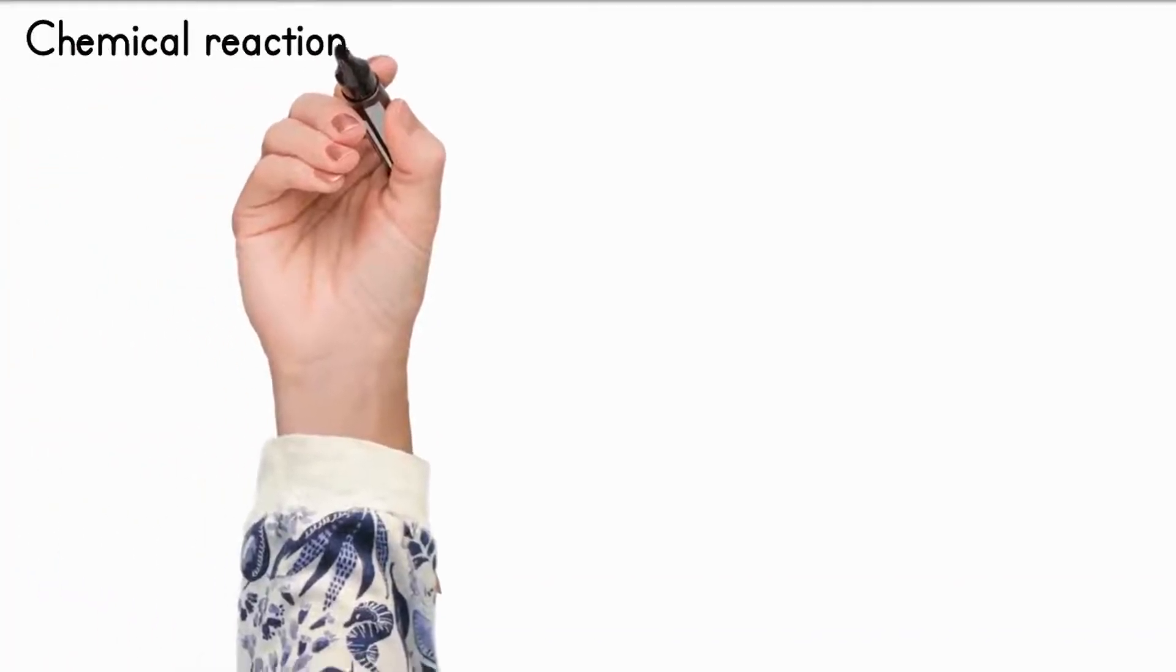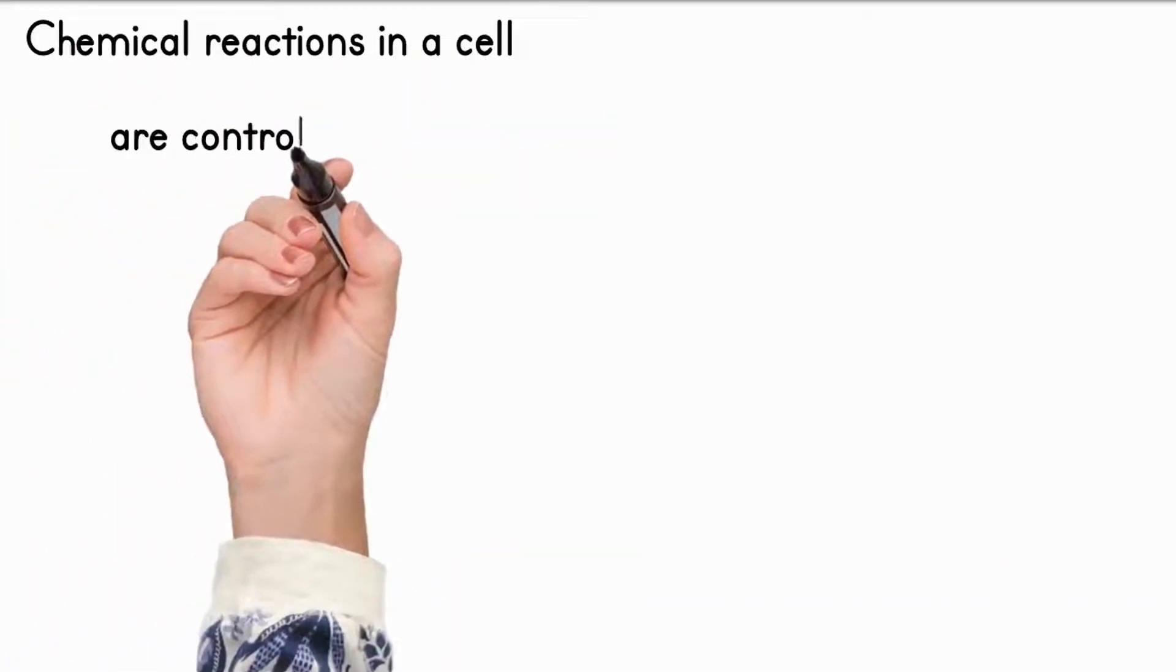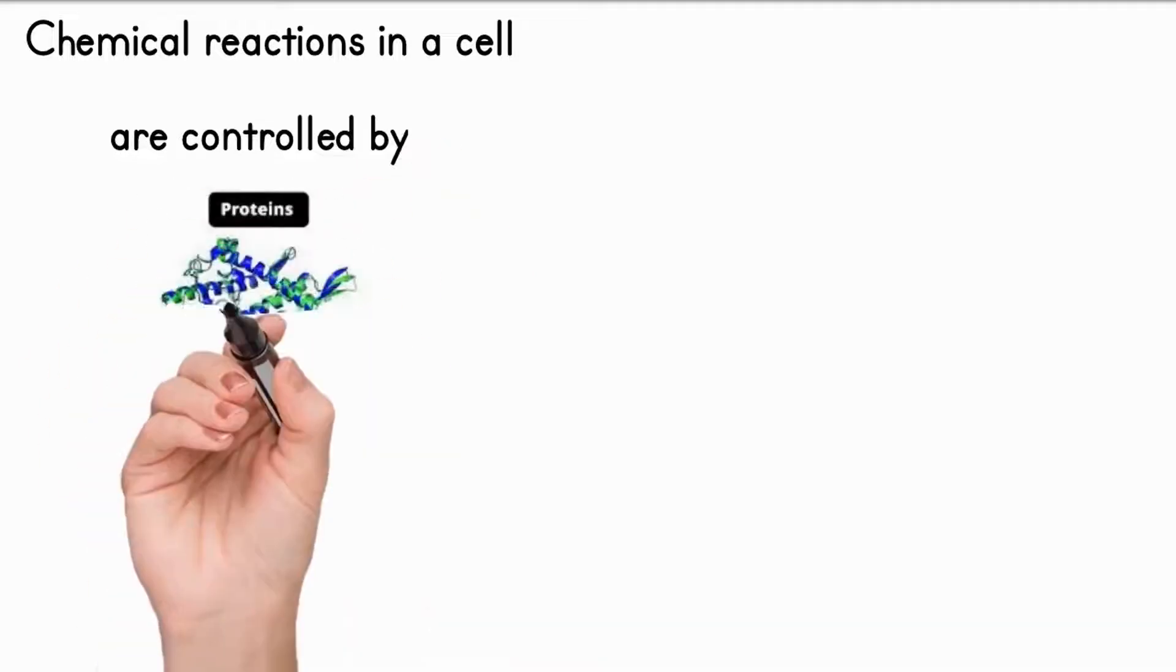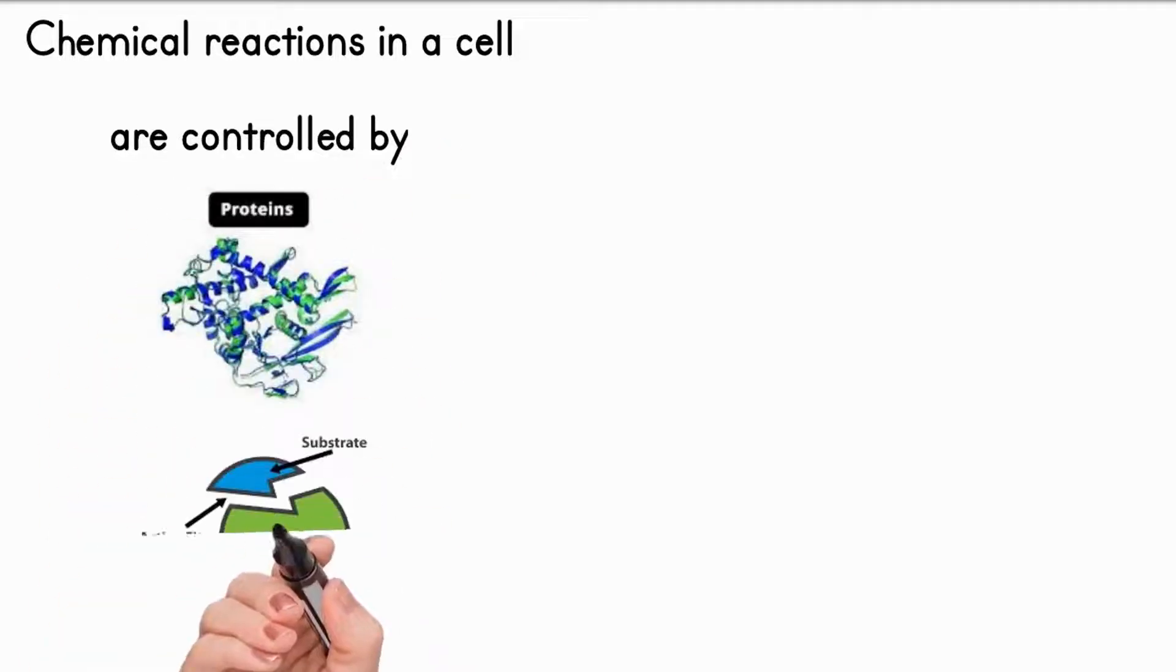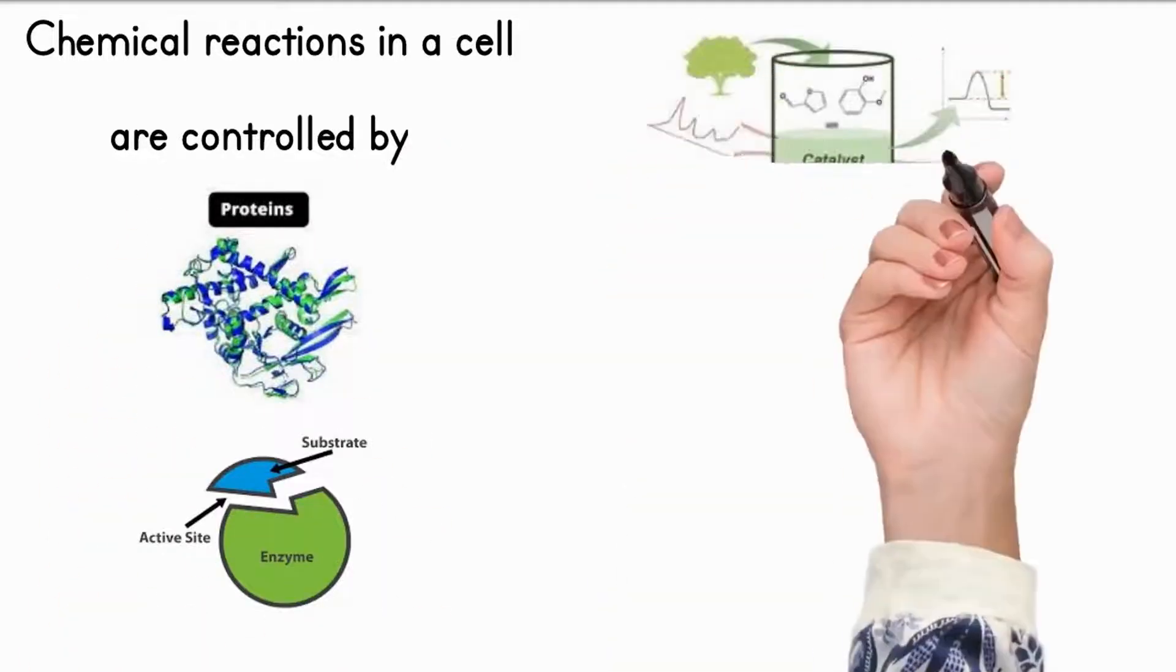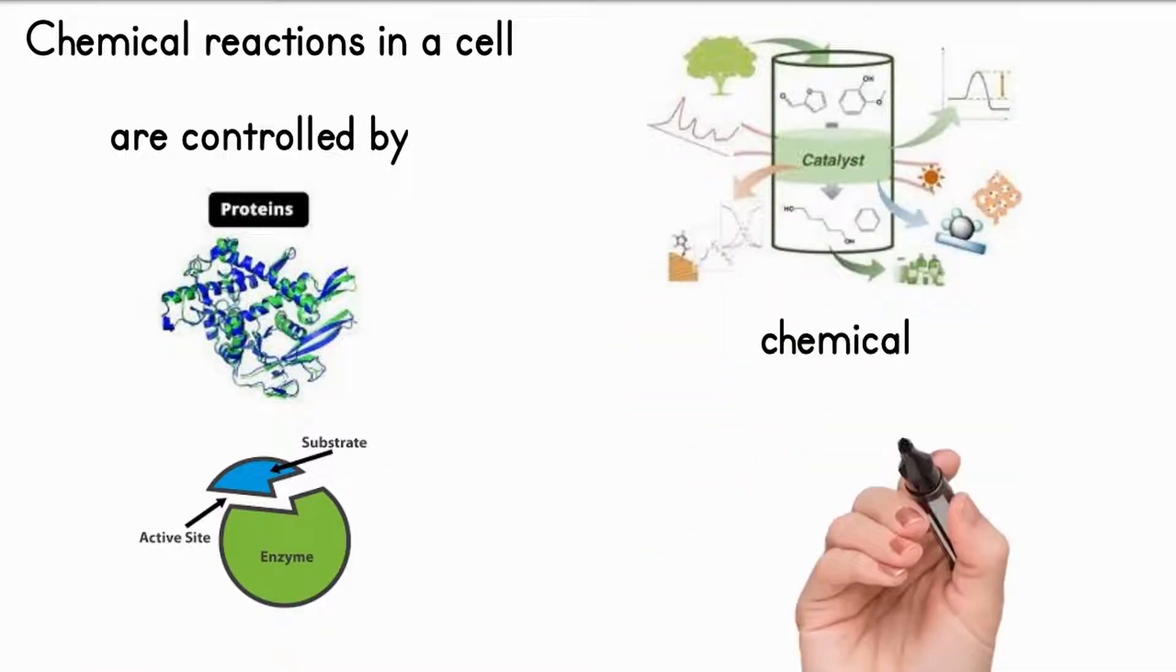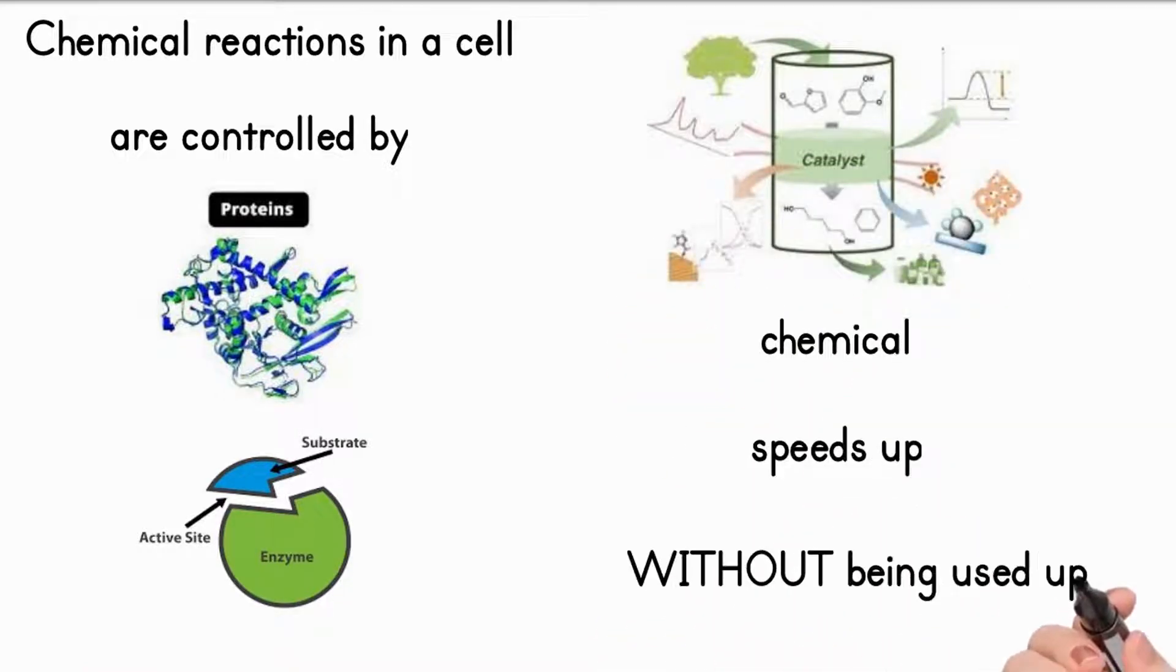The chemical reactions that take place in a cell are controlled by a group of proteins called enzymes. Enzymes are biological catalysts. A catalyst is a chemical which speeds up a reaction without being used up itself. Cells contain hundreds of different enzymes, each catalyzing a different reaction.